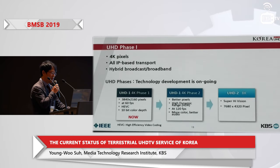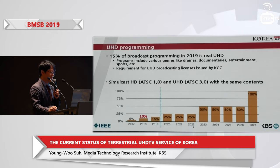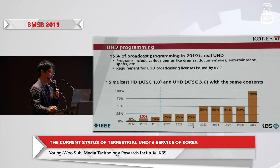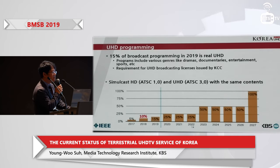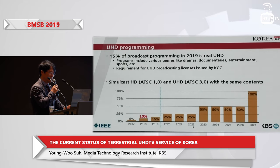We will include a lot of features from HD T-DMB. Through the UHD service, our government gave us regulations — we should make UHD contents first, and every year we should increase the portion. Now in 2019 we have 15%, next year 25%, and then 50% up to 100%. 2027 is our transition deadline. If there are no other issues, we should achieve that.